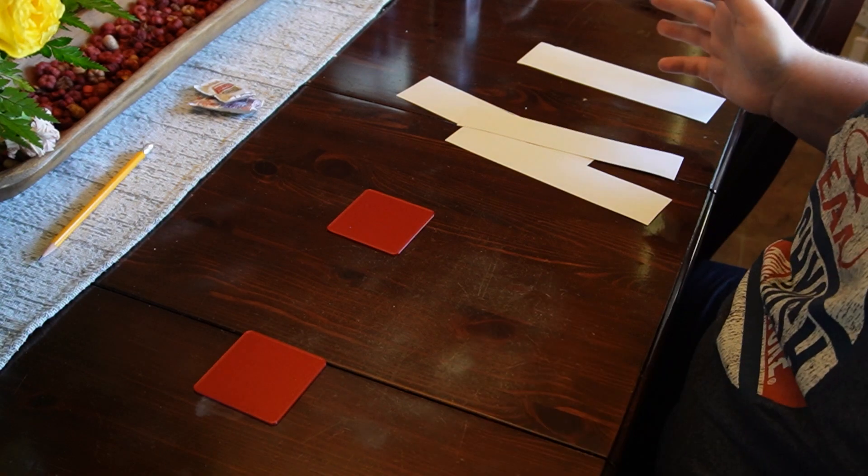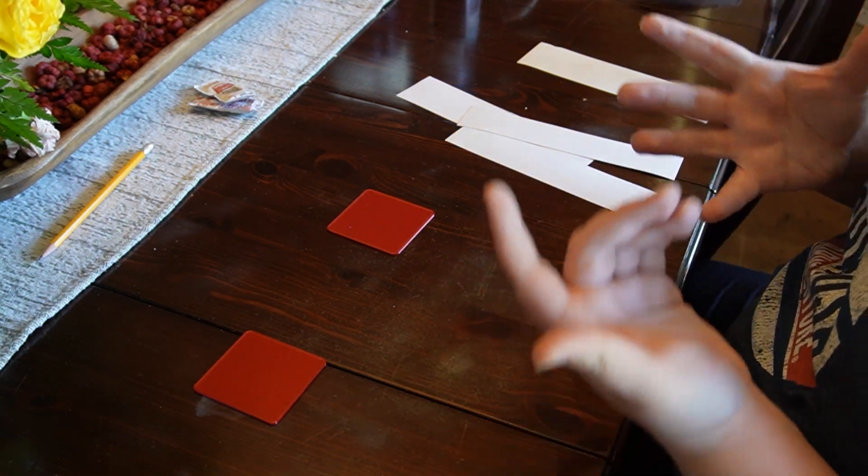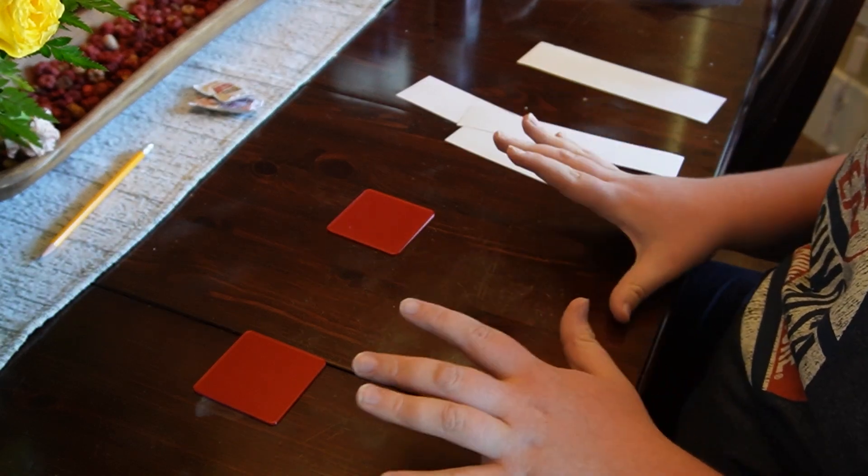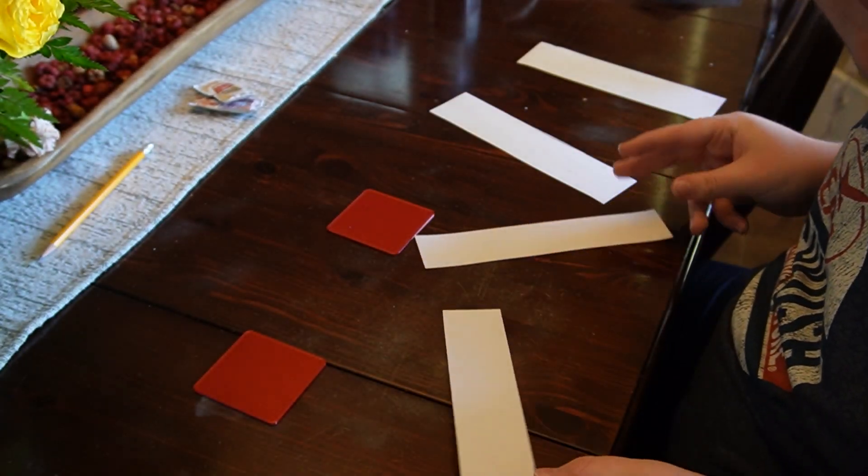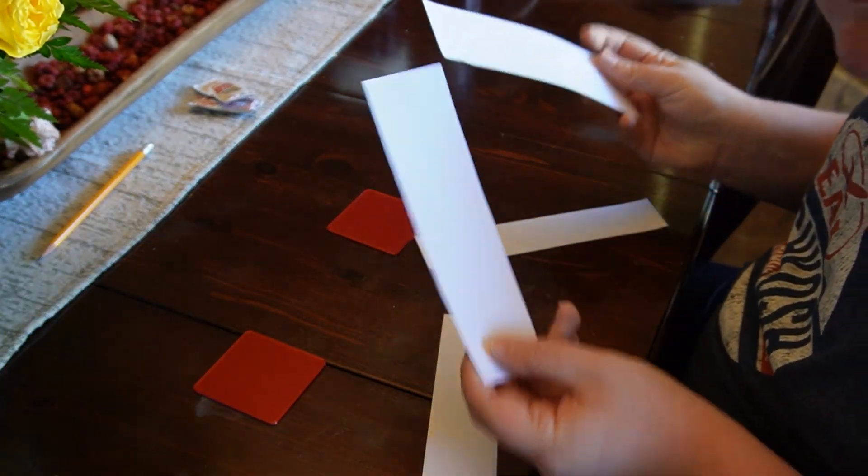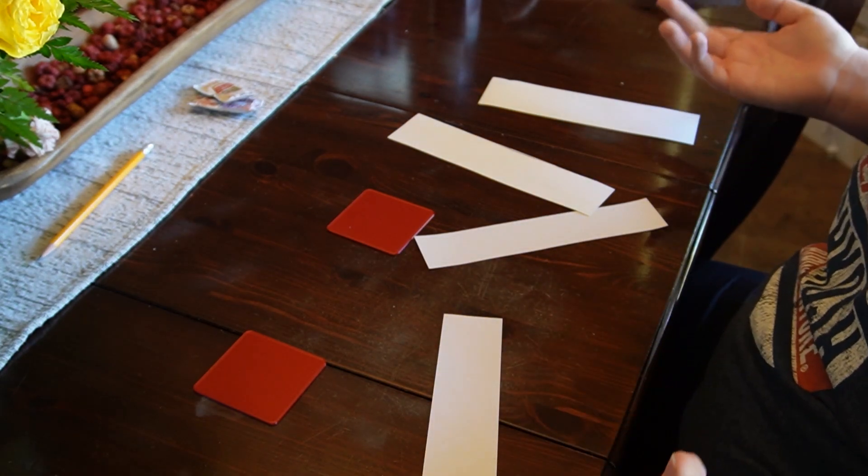Ta-da! All right, so as you can see we are now at the kitchen table and we have all the parts we need to make our stand. So I just cut out four strips of paper, not the same size. I tried to make them the same size but they didn't come out the same size, so there is that.